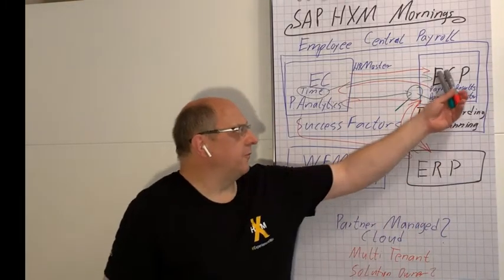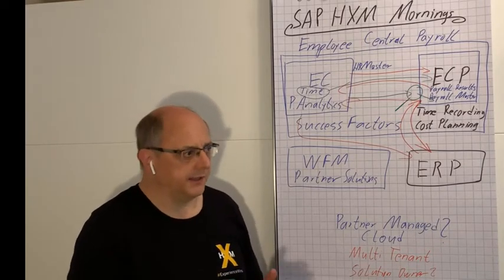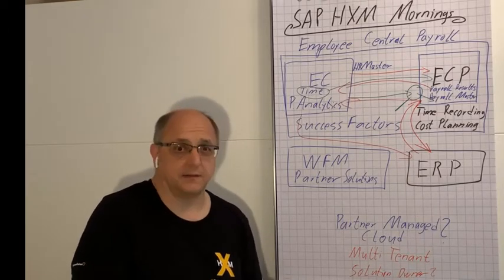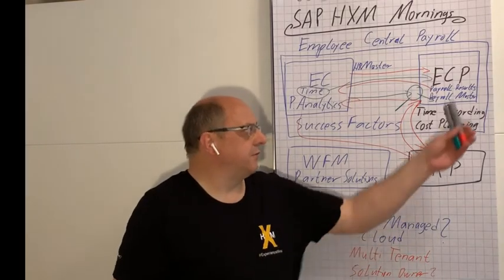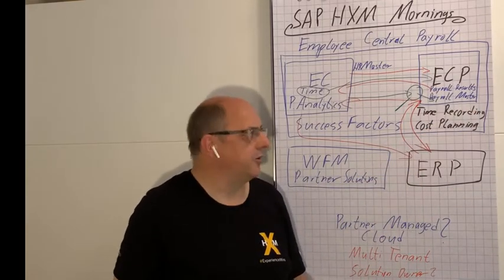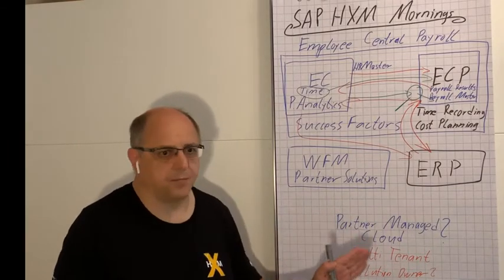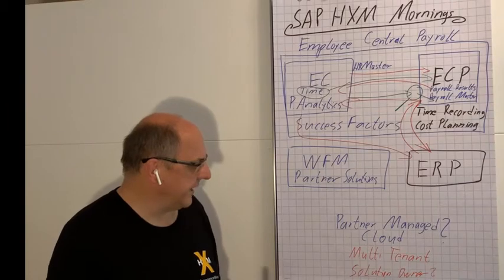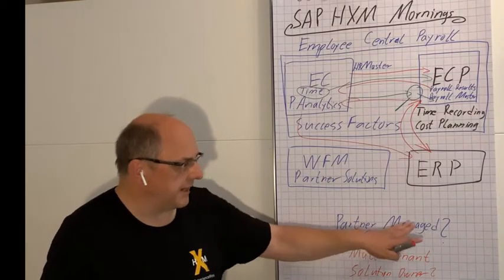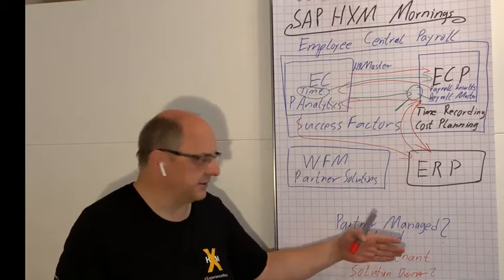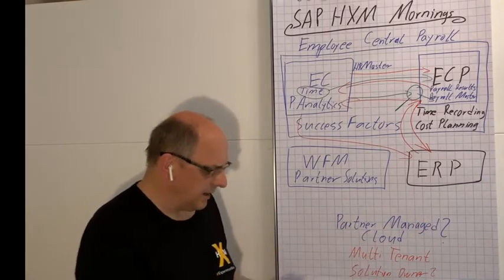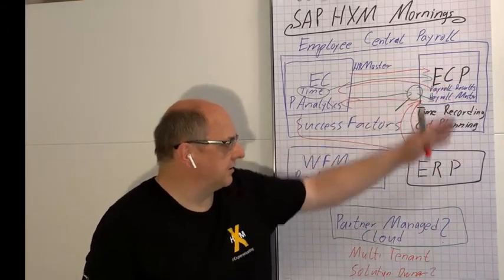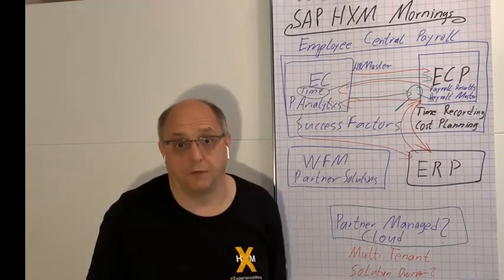One hitch with Employee Central Payroll is that for small organizations, you might hit a limit on the licenses. Because at this point in time, to my knowledge, you can't have it with less than 1,000 employee records. One solution suggested to get around that problem — and allegedly bringing other advantages — is the so-called partner-managed cloud. As the name says, this is a cloud solution managed by one of the few dedicated SAP partners able to offer this. They can basically buy 1,000 or more users from SAP and sell it to you for 50 records if you need it.